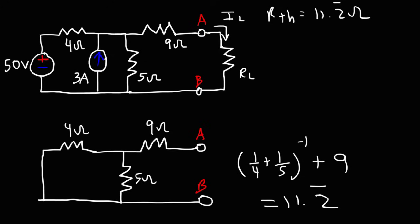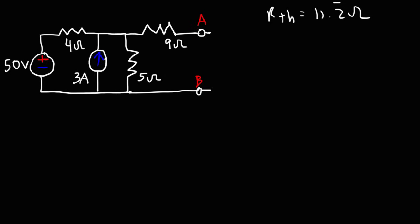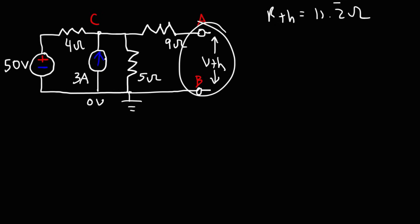Our next step is to calculate the Thevenin voltage. We get rid of the load resistor, because what we need here is an open circuit. To calculate the Thevenin voltage, we need to have everything except the load resistor, and calculate the voltage potential between point A and point B. We assign 0 volts to point B, and call a new node point C. Because of the open circuit where the load resistor was, there is no current flowing through the 9 ohm resistor, so there is no voltage drop across it, which means Vc is equivalent to Va.